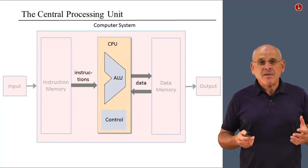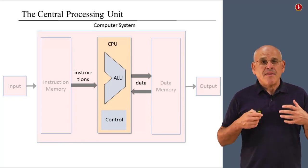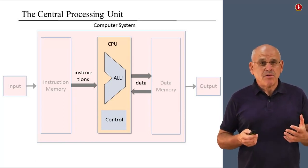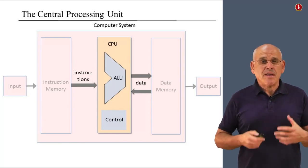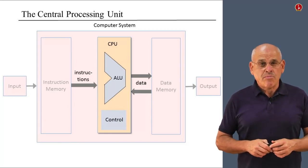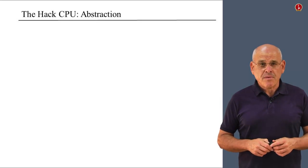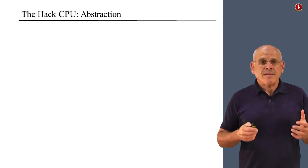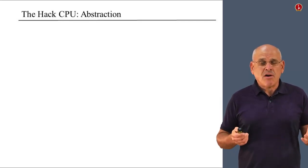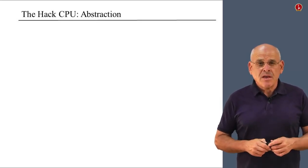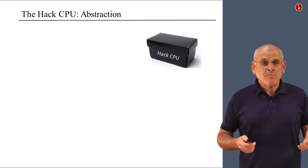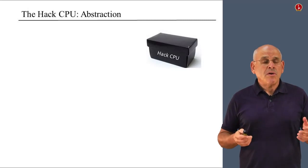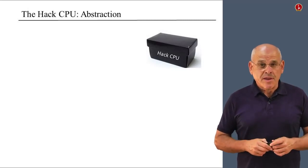In this unit, we're going to talk about the HECCPU — the specification of the CPU and how we're actually going to build it. As usual, it always pays off to start with the abstraction. We can think about the HECCPU as some sort of a black box that performs two truly remarkable things.